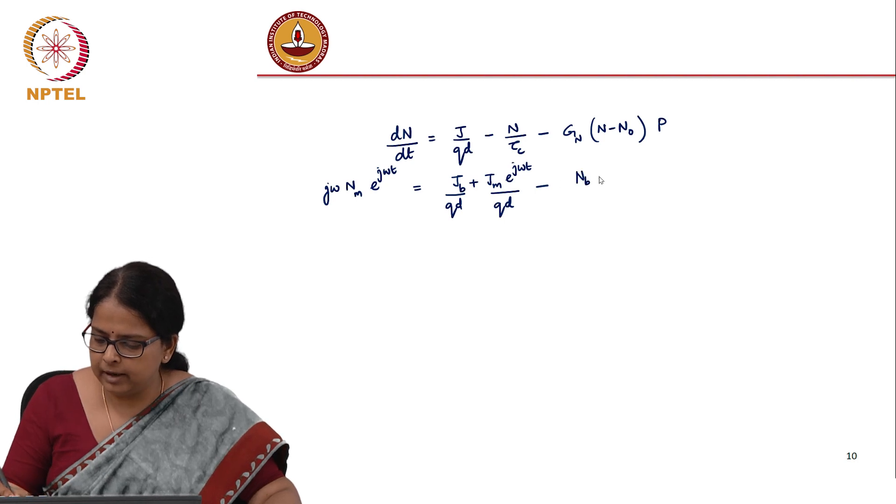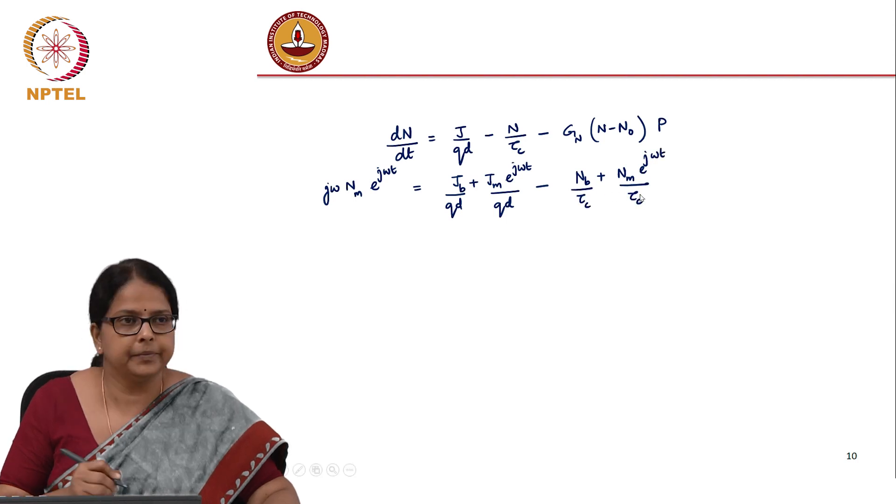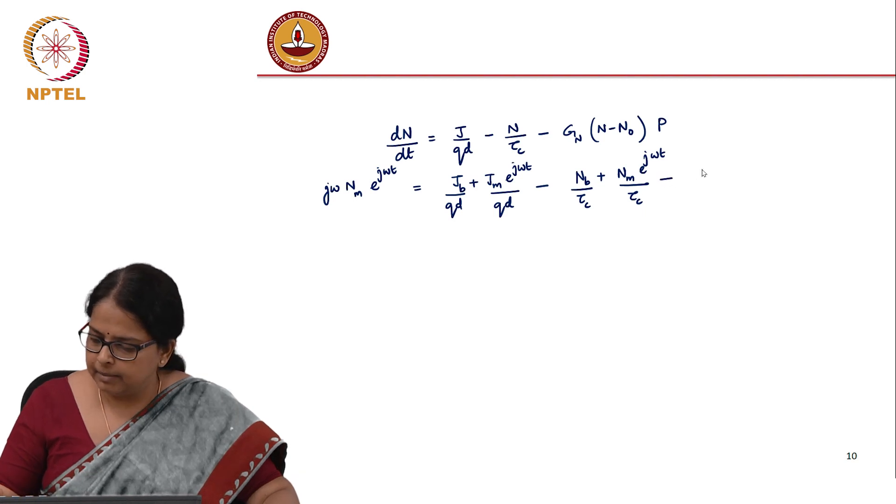n is going to be n_b plus n_m*e^(j*omega*t). This is again divided by tau_c minus g times n, which is again going to be n_b plus n_m*e^(j*omega*t) minus n_0.